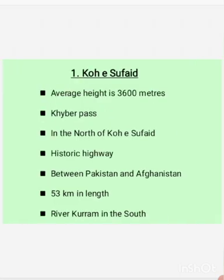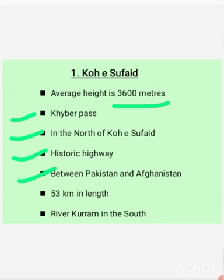The average height of Koh-e-Sufaid is 3,600 meters. The Khyber Pass is located in the north of Koh-e-Sufaid, which is a historic highway between Pakistan and Afghanistan. The length of the Khyber Pass is 53 km.